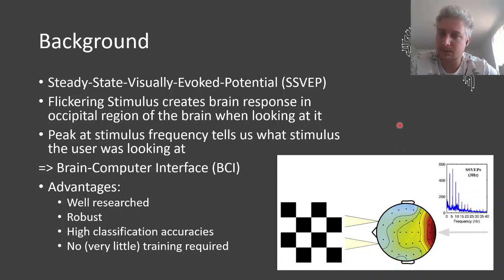By doing so, you can actually realize brain-computer interfaces because you measure brain activity and can detect at which stimulus a person was looking at. The advantages of this technology are that it's quite well researched, robust, it has a high classification accuracy and it requires only very little and actually sometimes no training.